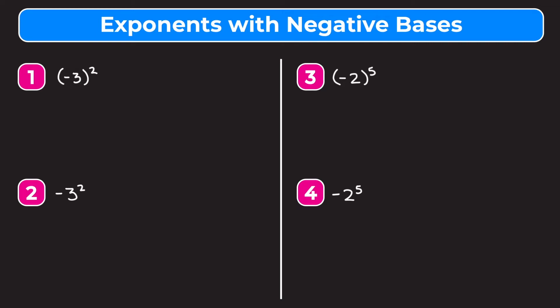Example 1 is saying that we want to take negative 3 and square it, which means we want to multiply it by itself two times. So we're really evaluating negative 3 times negative 3. When you multiply two negative numbers together it turns into a positive number. Because 3 times 3 is 9, negative 3 times negative 3 is also 9. So the quantity of negative 3 squared is equal to 9.